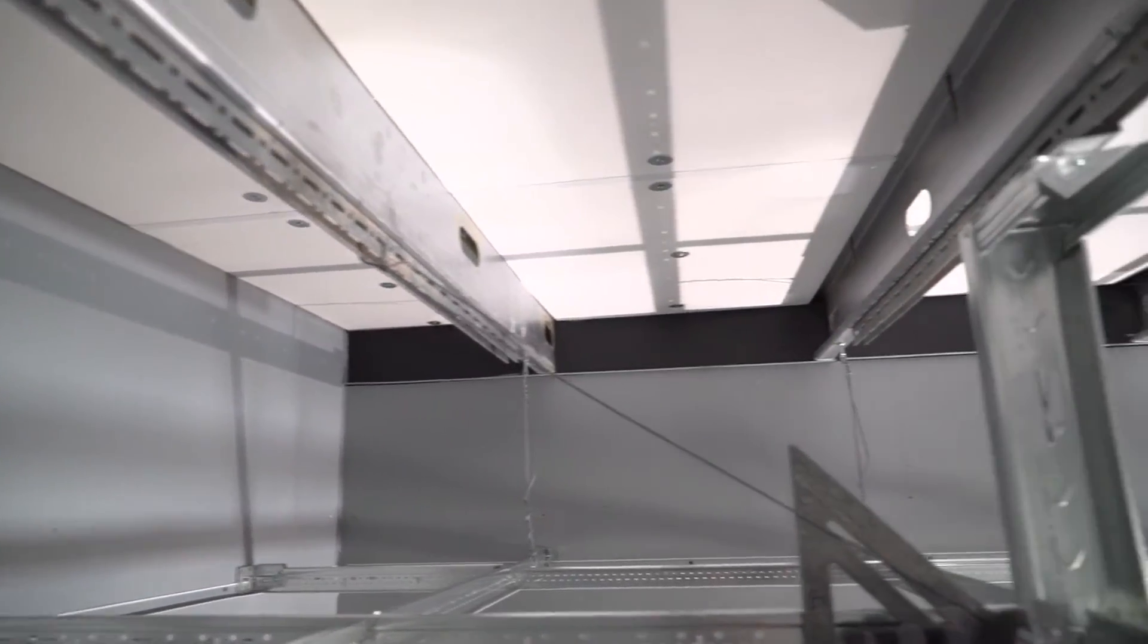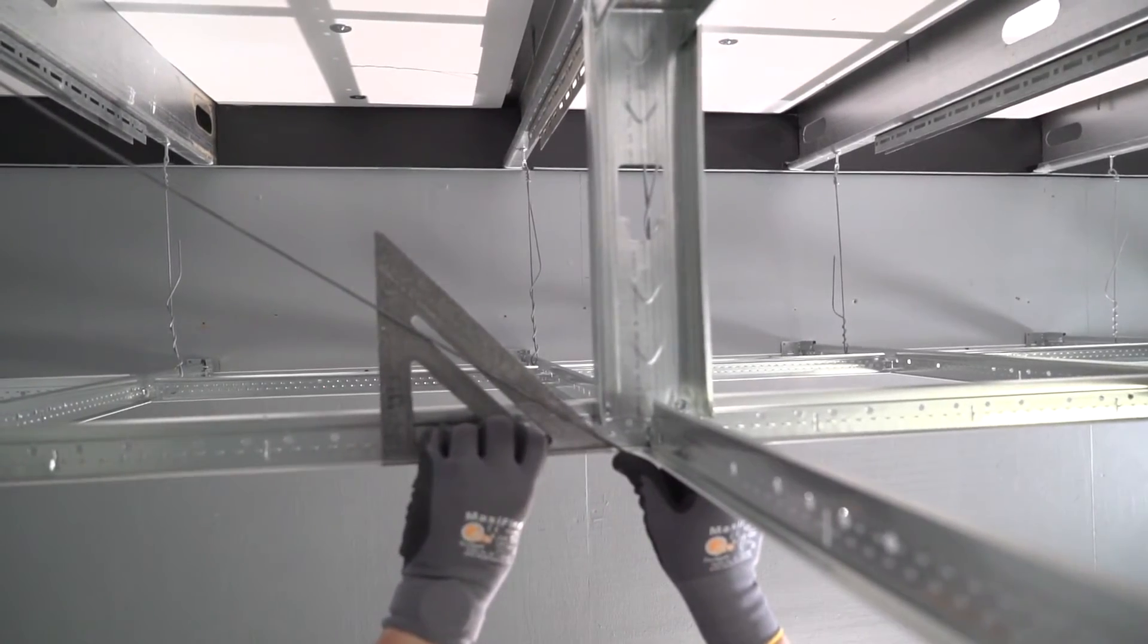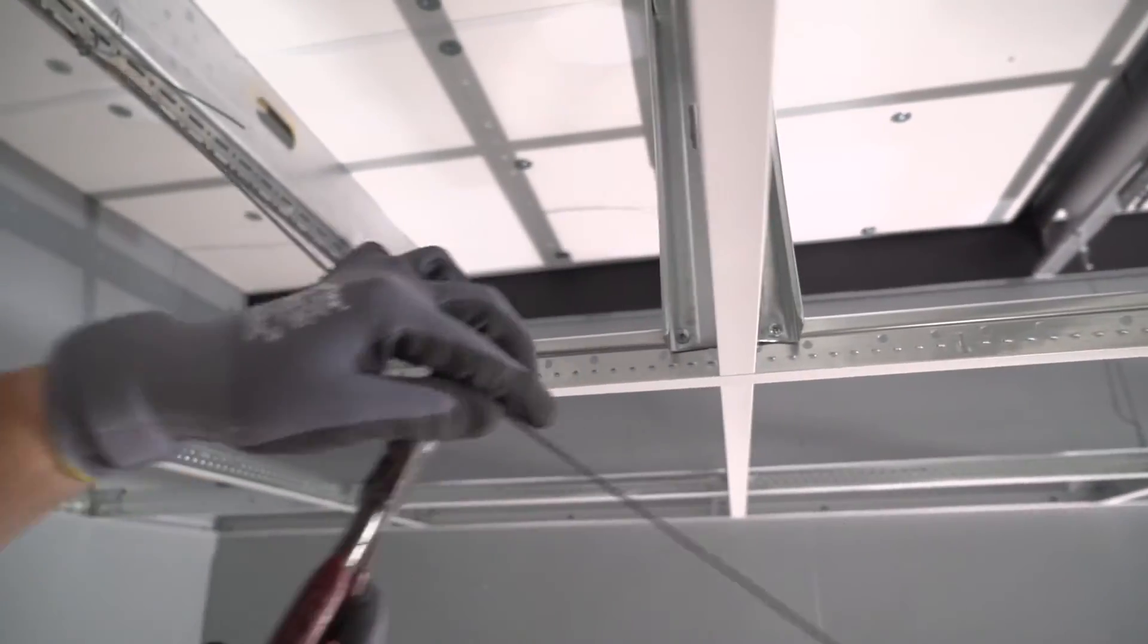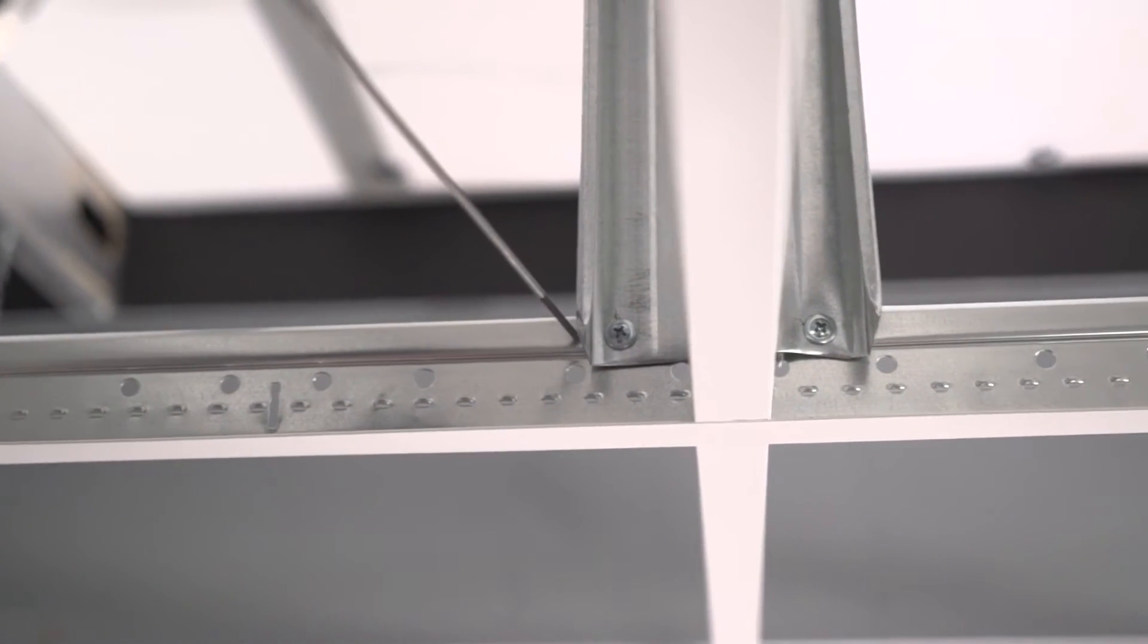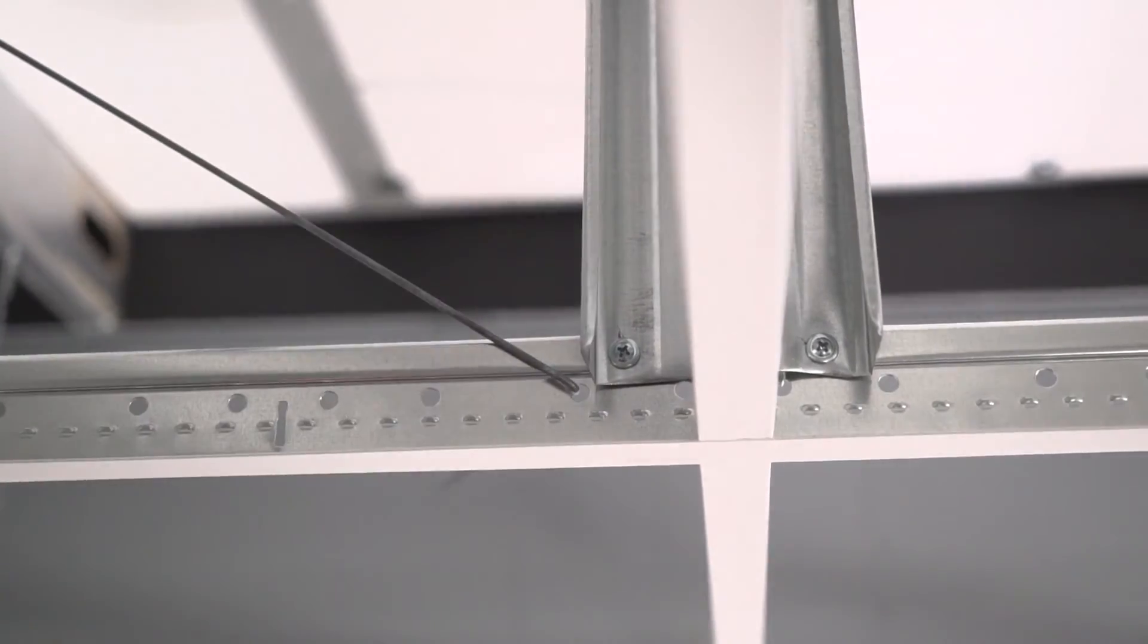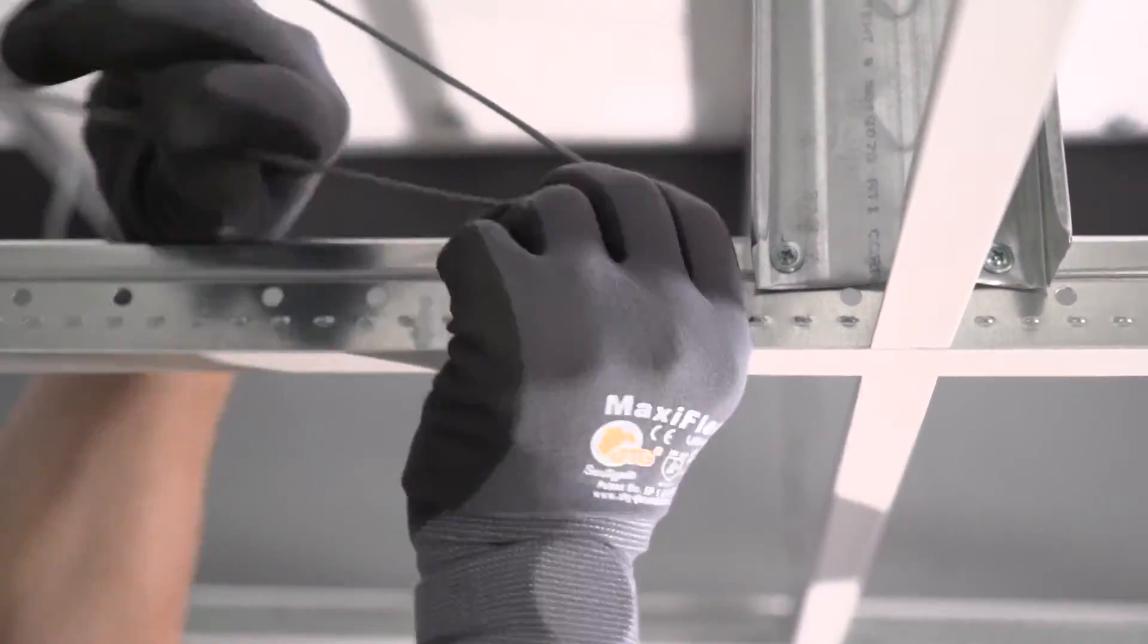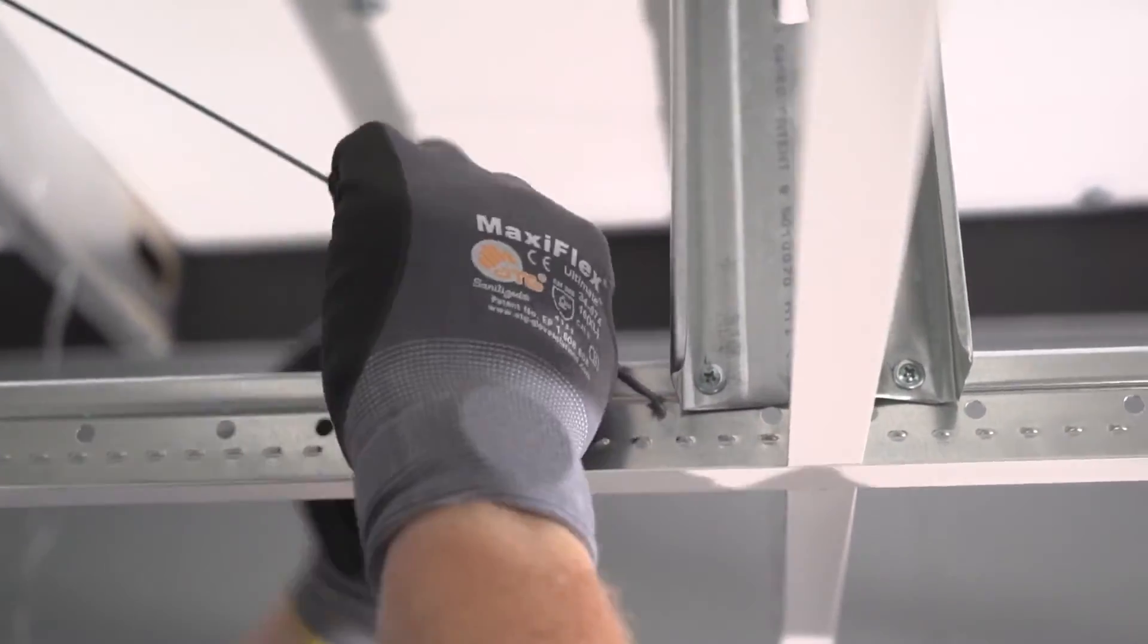After your compression post is installed, you will need to install four 12-gauge splay wires equally arrayed in four directions from the post to structure. These diagonal wires can be no greater than 45 degrees. Each wire needs to be within two inches of the intersection and tight with no slack in it at all.